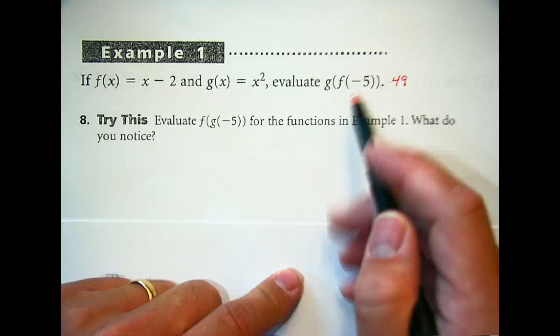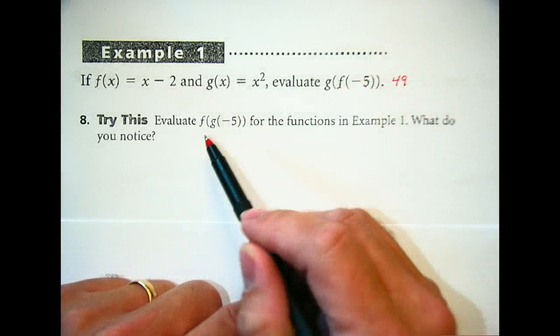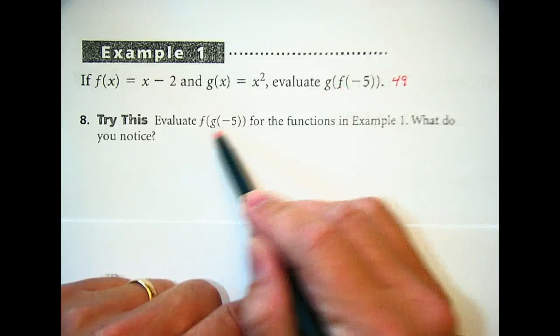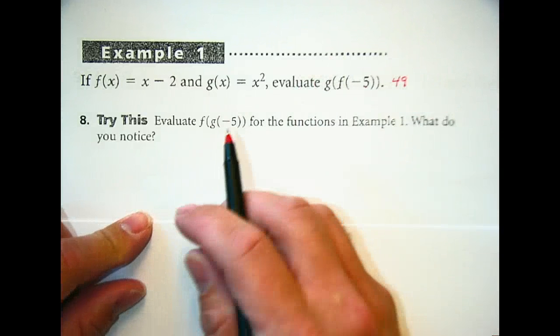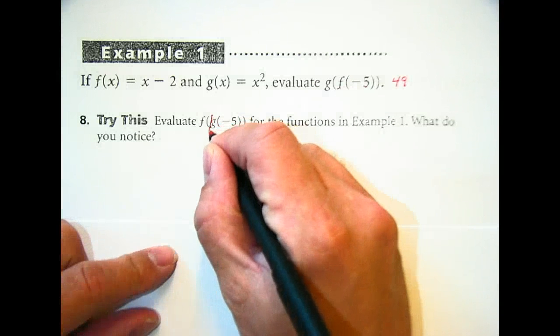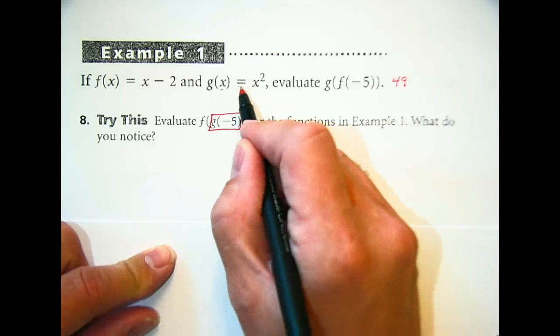So you'll note the difference here. We have g(f(-5)). They're asking us on number 8 to find f(g(-5)). Note the difference, the g and the f have changed. When you're dealing with this, this is like a nested function. We're going to put this piece in for the g(x) first.